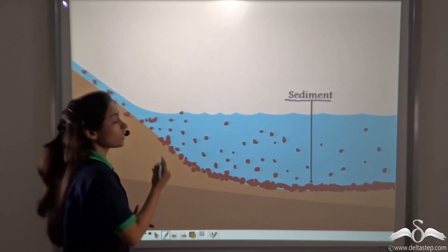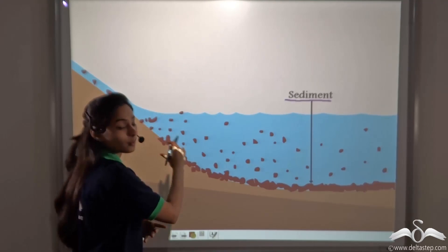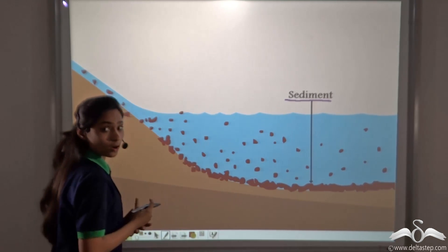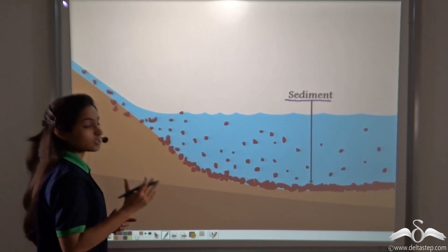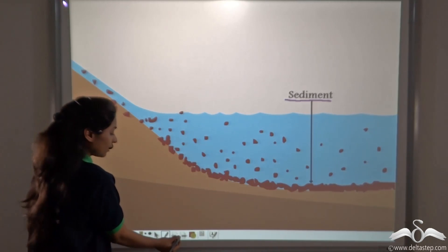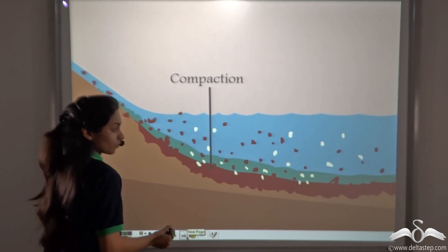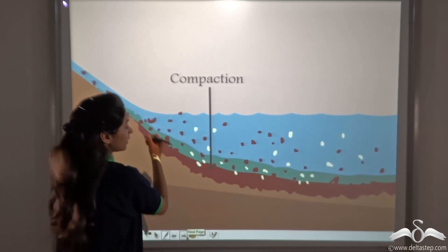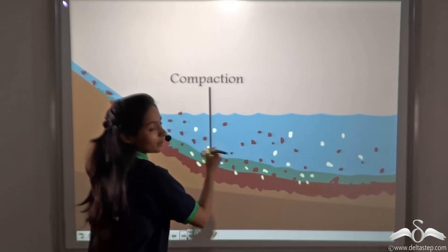The layers of sediments come and settle at the bottom. How will these form rocks? At first, the eroded sediments settle at the bottom. Then one layer of sediment settles, then a second layer, and the third layer, and so on.